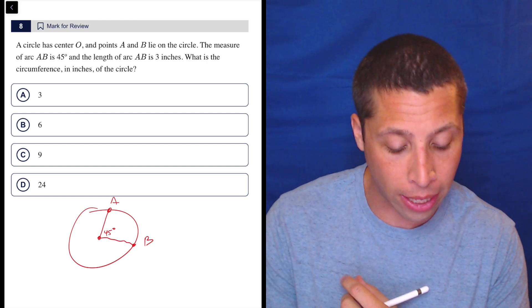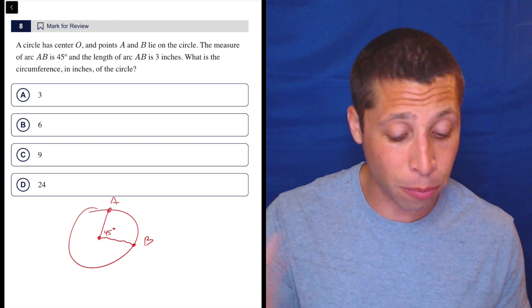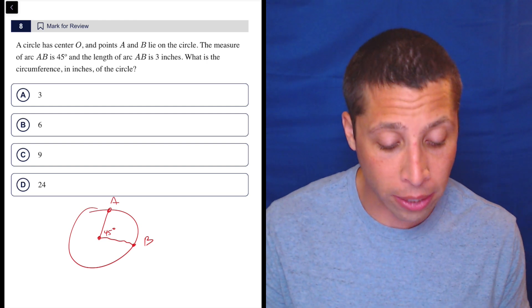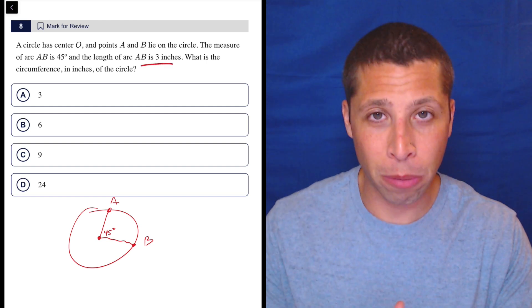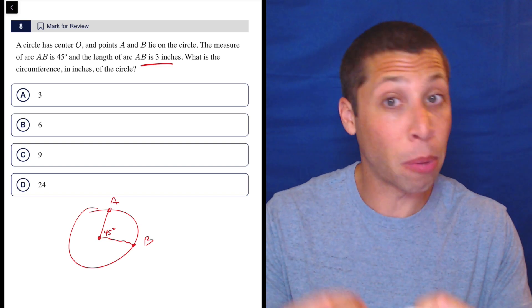It's better to get back to that quickly because they also tell us, and this is going to weird people out, that the length of arc AB is three. So you're like, how could it be 45 and three?